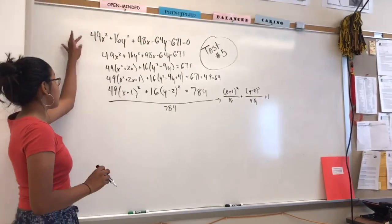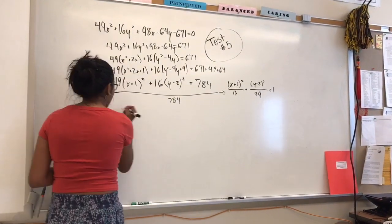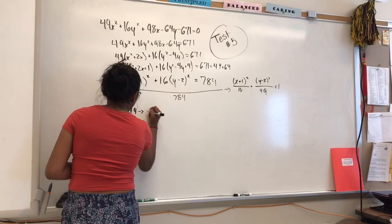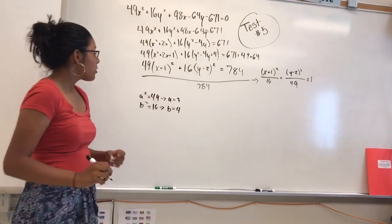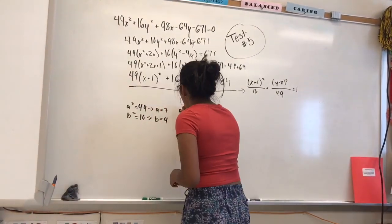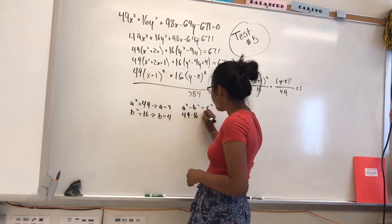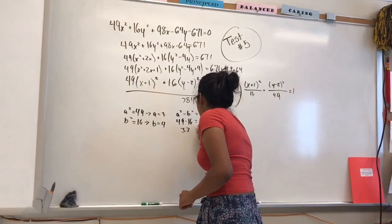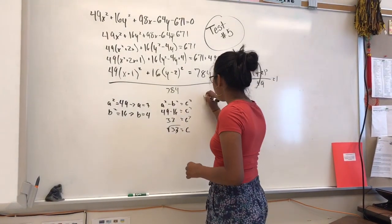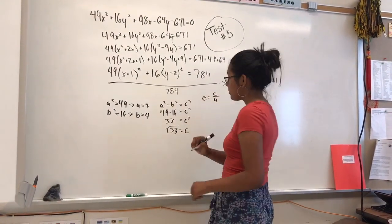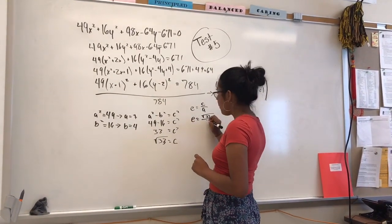Okay, so here we have test 5 for finding eccentricity. We took this ellipse equation and simplified it to graphing form. Now we can find the relevant values: a squared equals 49, so a equals 7; and b squared equals 16, so b equals 4. For an ellipse, a squared minus b squared equals c squared, so 49 minus 16 equals 33, meaning c equals the square root of 33. The eccentricity is c over a, so the eccentricity is the square root of 33 over 7.